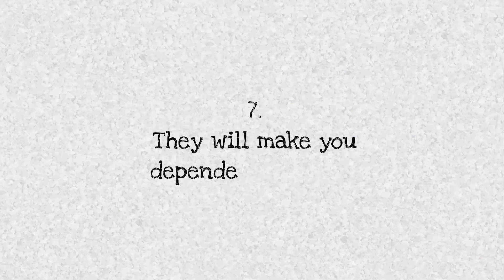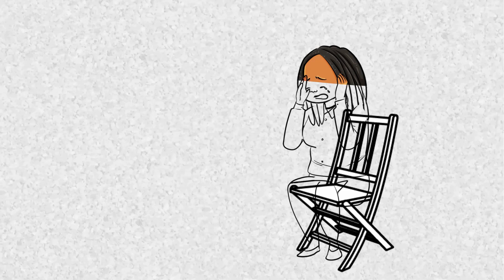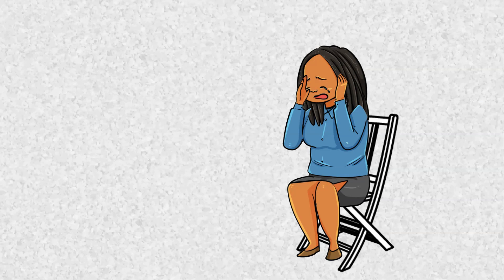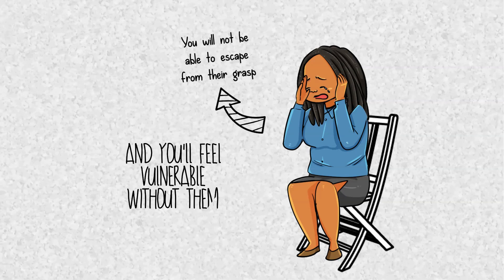Seven. They will make you dependent on them. The main purpose of this scheme is to control you, and the perfect way for them to do that is to make you dependent on them. Therefore, you will not be able to escape from their grasp, and you'll feel vulnerable without them.